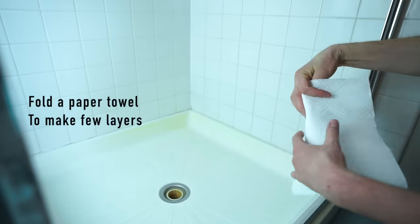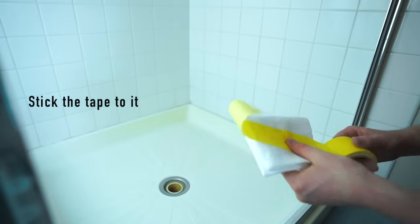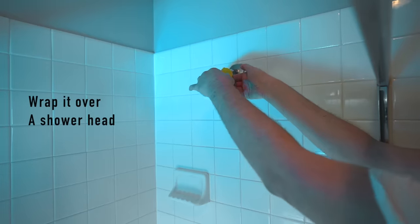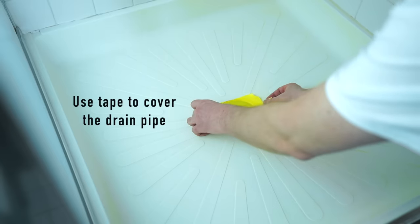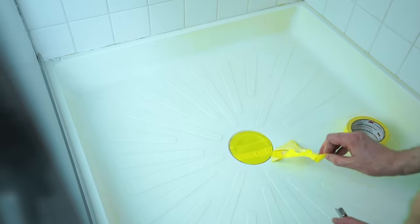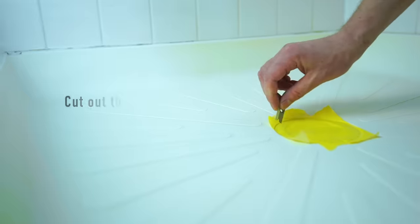Take a paper towel and fold it a few times. Stick the tape to it and attach the shower head to prevent any water leaks during the process. Use the same tape to cover the drain pipe. Make two layers of tape. Use small blade to cut a round hole.